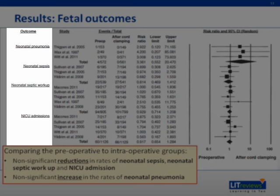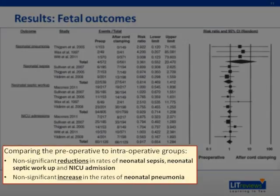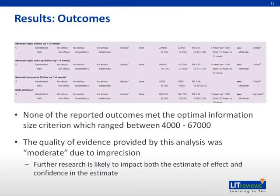Several neonatal outcomes were also investigated. All pooled results cross the unity line, and therefore it is concluded that there is no significant difference in the rates of neonatal outcomes with regards to the timing of antibiotic administration. Comparing the preoperative and intraoperative groups, there is a non-significant reduction in neonatal sepsis, neonatal septic workup, and NICU admissions, and a non-significant increase in neonatal pneumonia. None of the reported outcomes meet the optimal information size criteria, which ranges between 4,000 to 67,000, so the quality of evidence was determined to be moderate due to imprecision, implying further research is needed.